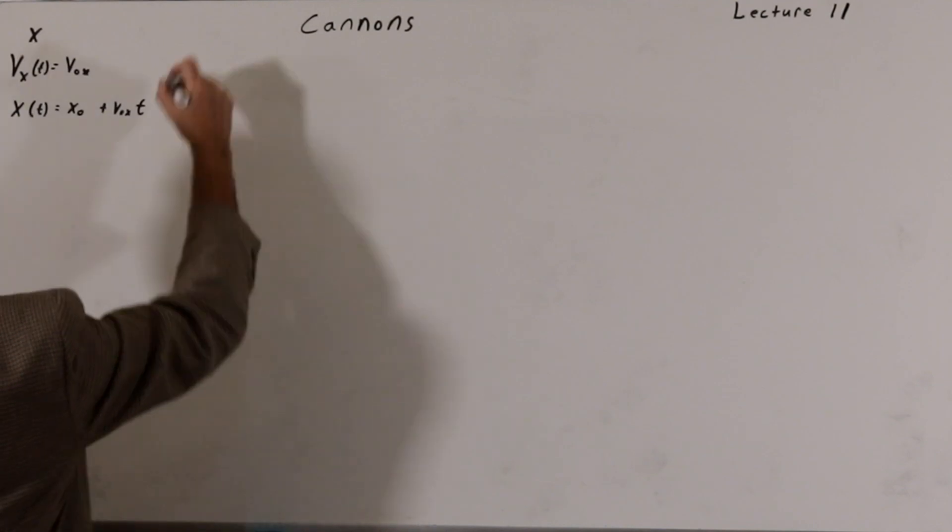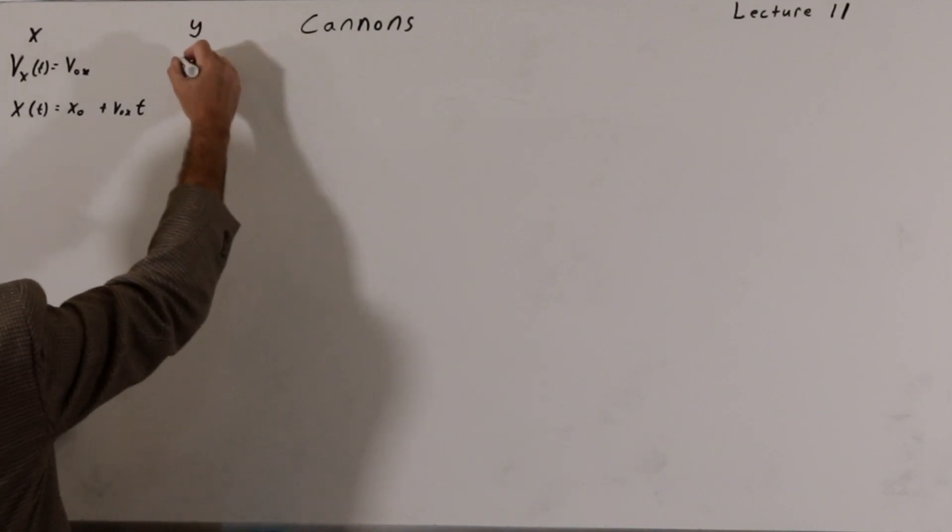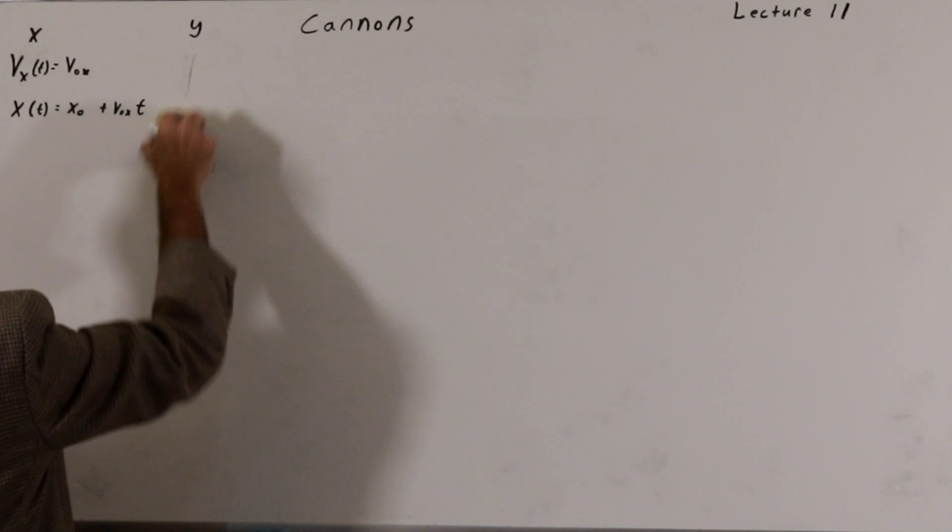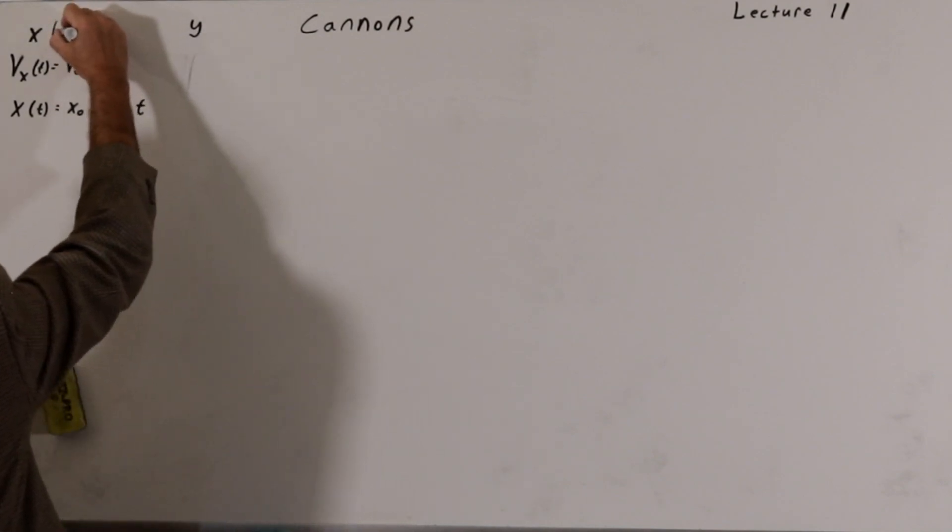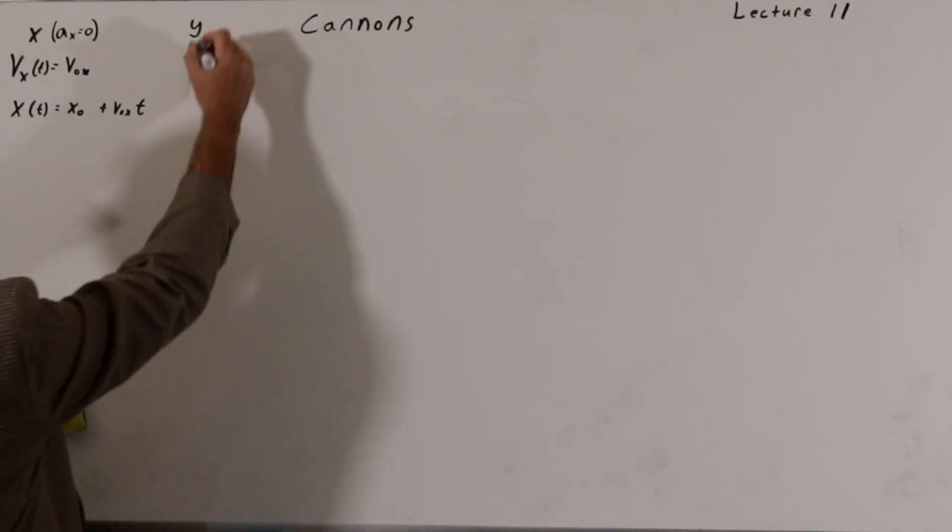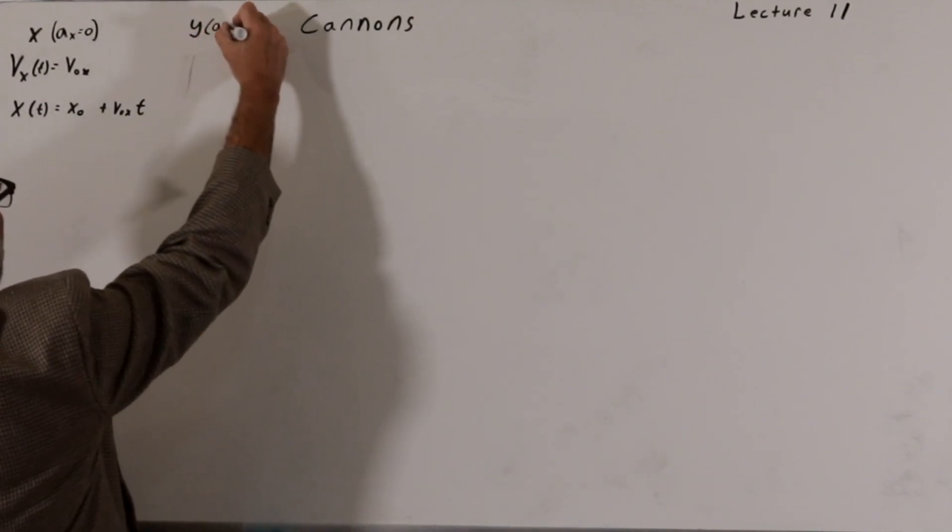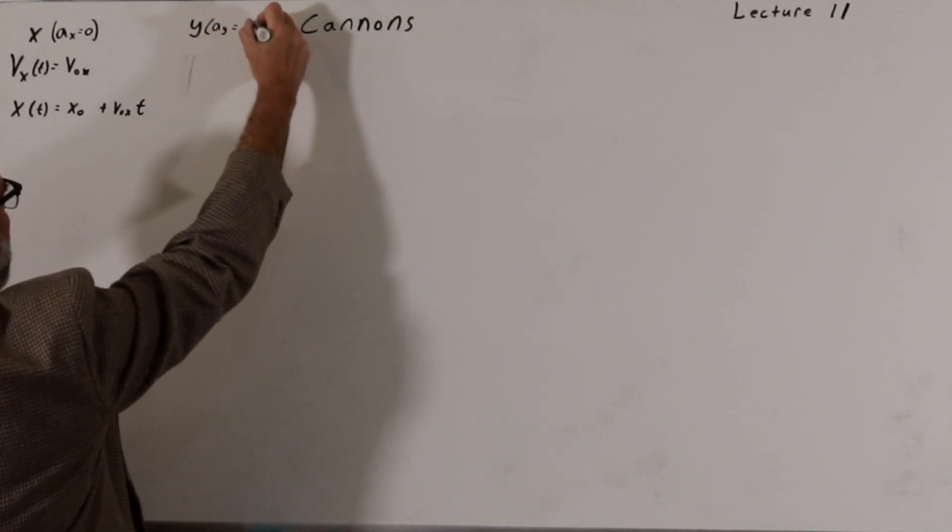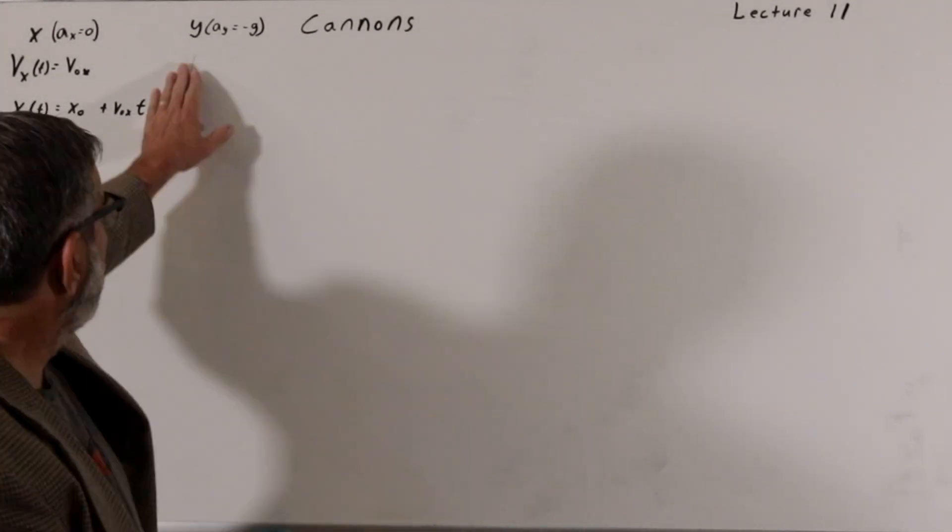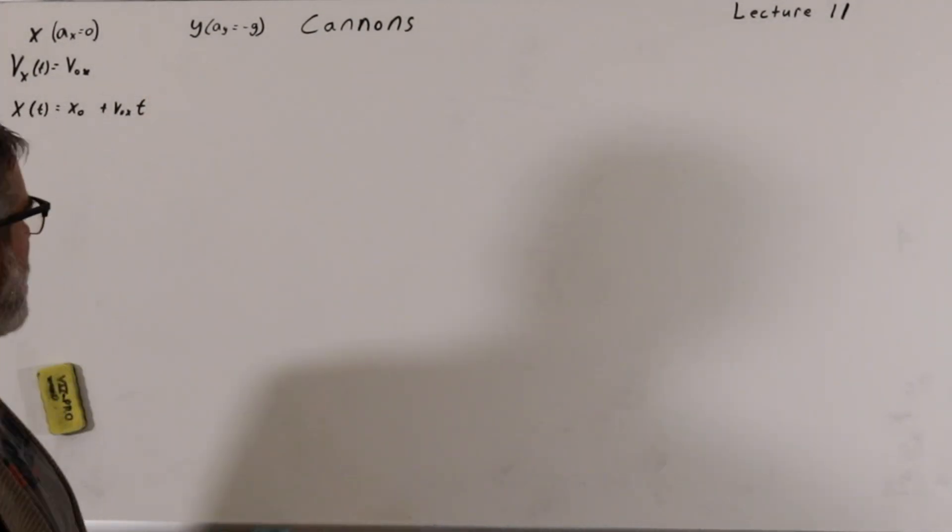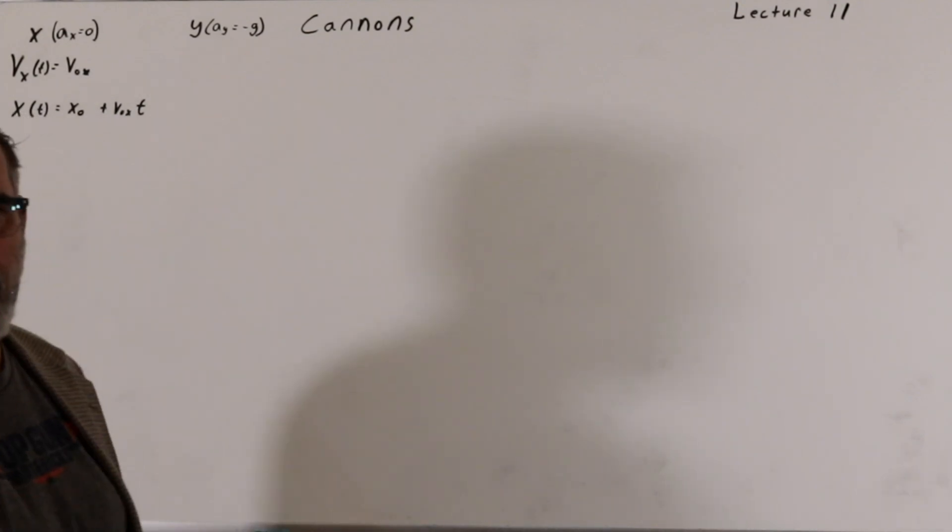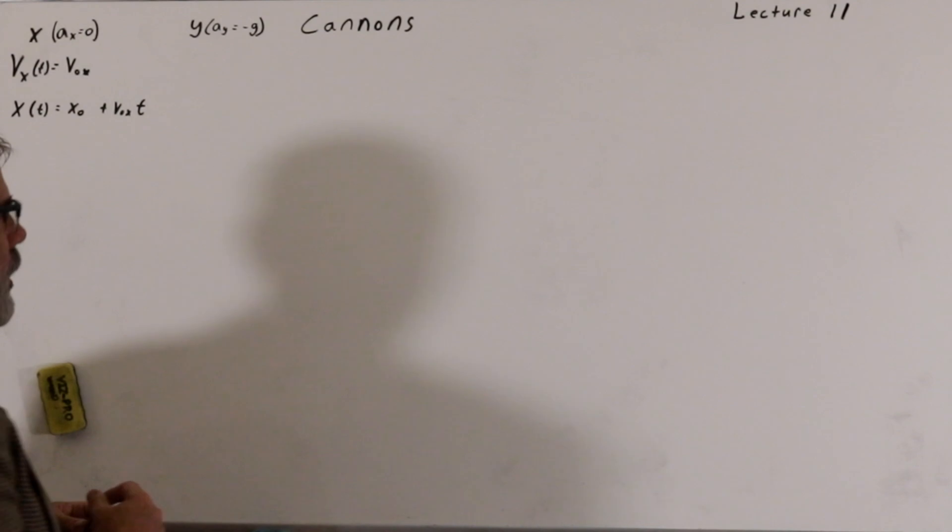Now the y component is a little bit different. So the y component will have an acceleration. I'll write this up here: a sub x equals 0, so that means there's no acceleration in the x direction, whereas for y, we have a sub y equal to minus g. So whether you want to use 32 feet per second per second, or 10 meters per second per second, we'll use both in different circumstances, but we'll assume that our y axis is always going up, and so this will always be in the negative direction, and g is one of those two constant numbers.